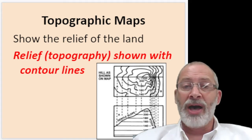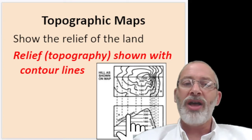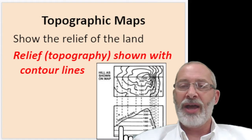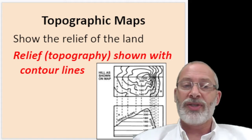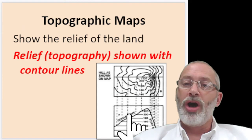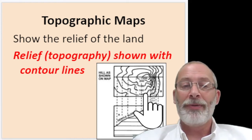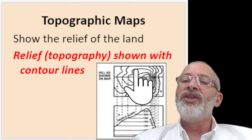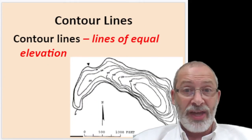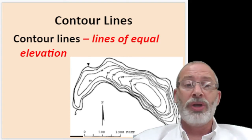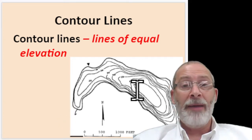If you look at this model — and I'll show you one in real life in the lab — it illustrates a cross-section of a hillside, almost exactly like this one. Here's a cross-section of a mountain. If you were to draw lines of elevation on it and then look at it from the top, this is what it would look like. These lines represent lines of equal elevation, known as contour lines or topographic lines.